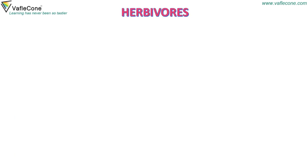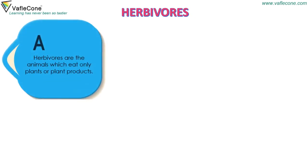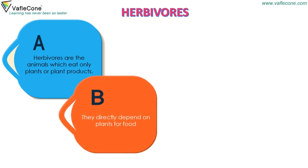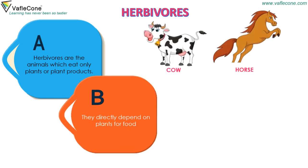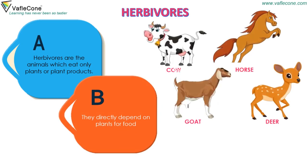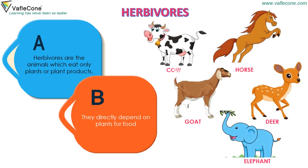Herbivorous are the animals which eat only plants or plant products. They directly depend on plants for food. For example, cow, horse, goat, deer, elephant, etc.